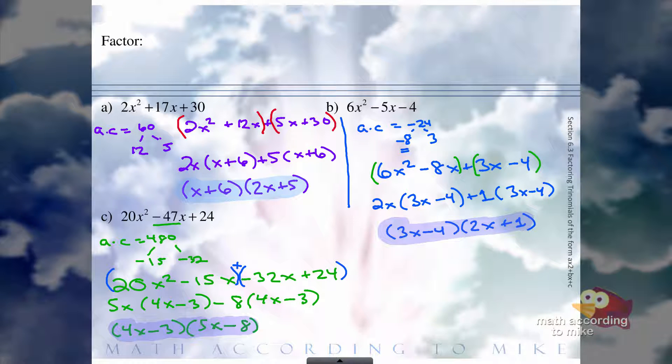Now again, if you put it as negative 32 and then negative 15, so in opposite order, or reverse order I should say, you'll still get the same answer but your intermediate work will be different. But your final factorization will be 4x minus 3 times 5x minus 8, again in either order.